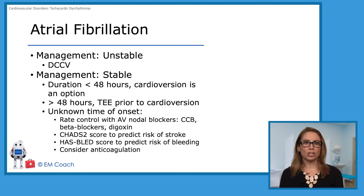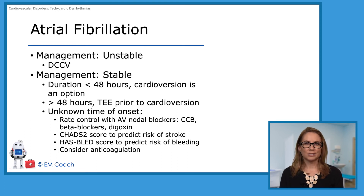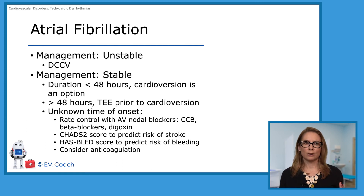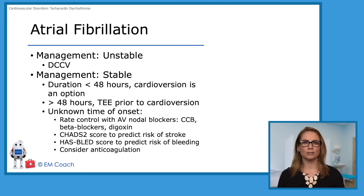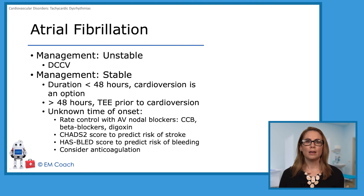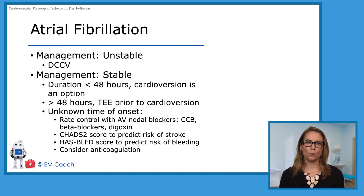You can use the CHADS score to predict the risk of stroke within a year, and the HAZBLAD score to predict the risk of bleeding with anticoagulation. There are risks and benefits of anticoagulation, and the CHADS and HAZBLAD can help you determine the best option for each patient. You can consider anticoagulation — maybe aspirin, or maybe that patient is going to start on a DOAC or warfarin.